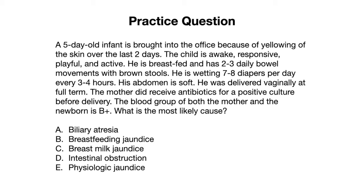His abdomen is soft. He was delivered vaginally at full term. The mother received antibiotics for a positive culture before delivery. The blood group of the mother and the newborn is B positive. What is the most likely cause?